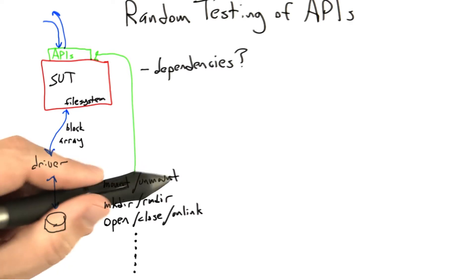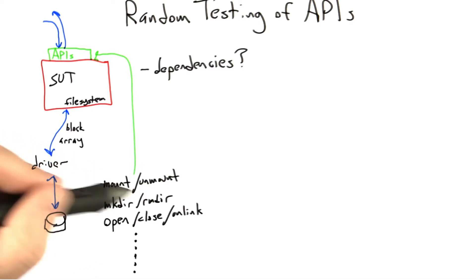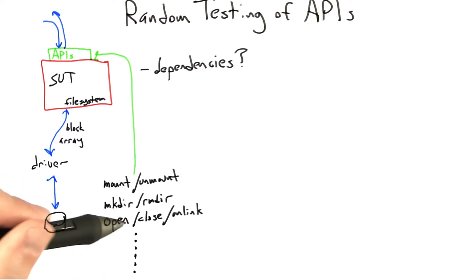Similarly, no file system call will succeed after we've unmounted it. So we want to be careful with mount and unmount. We don't want to just freely mix those into our stream of random API calls that we're making.